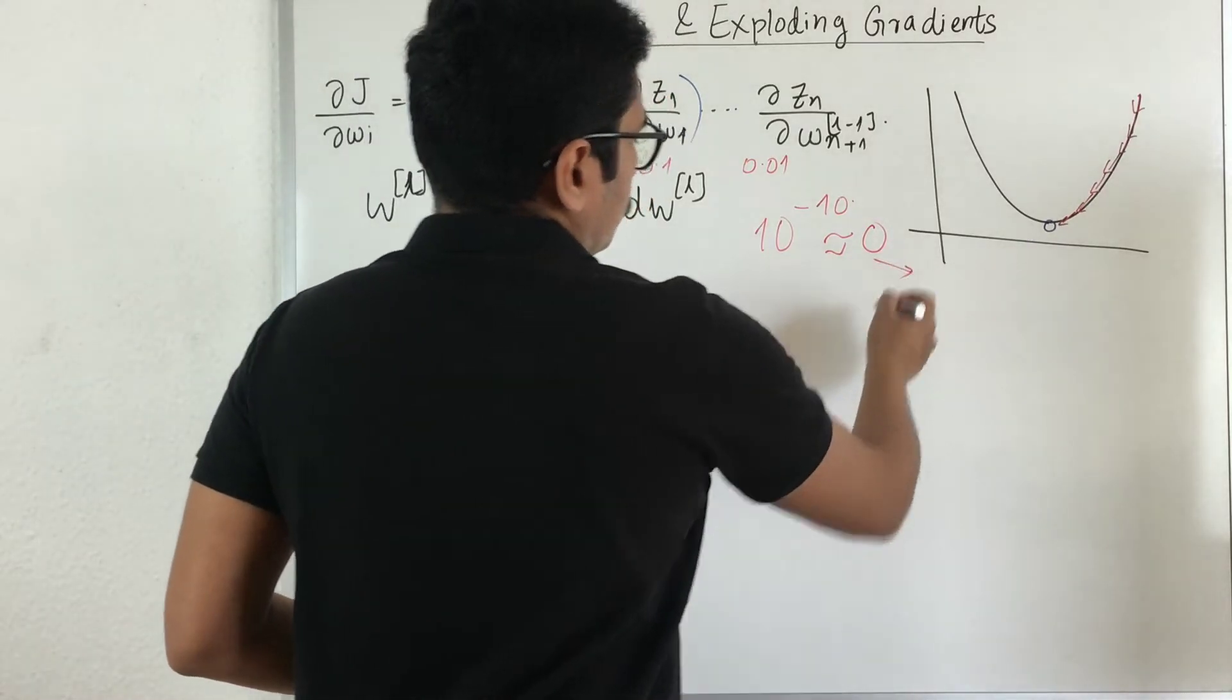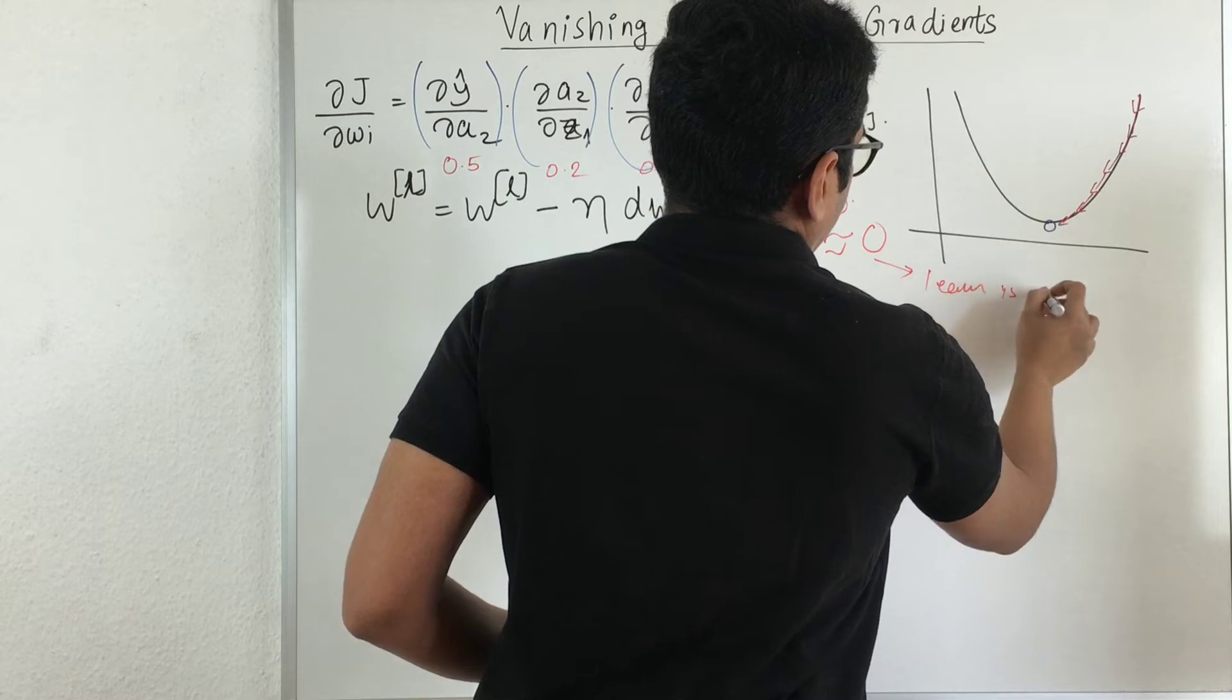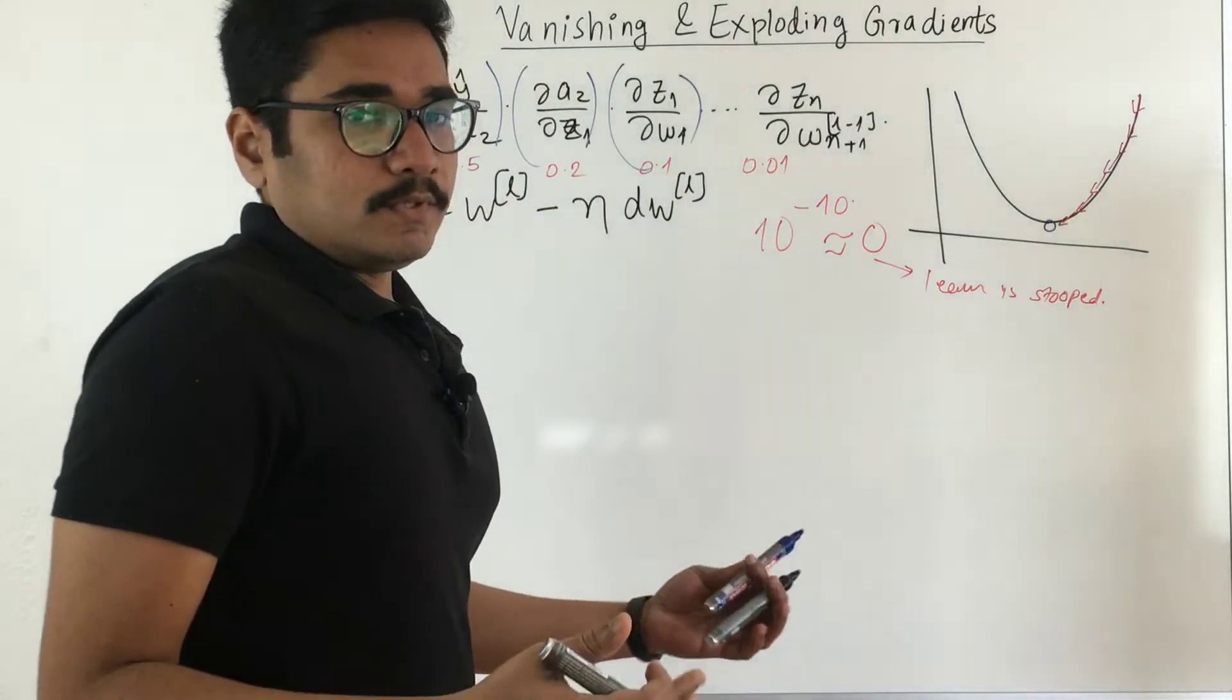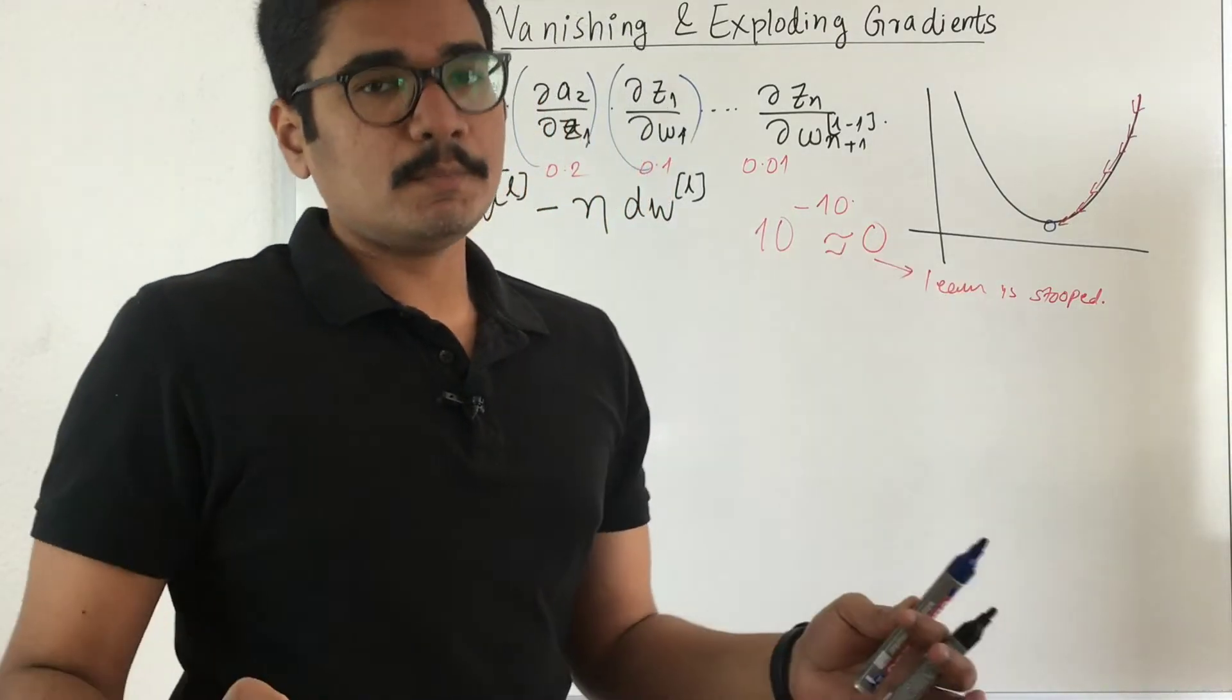So if your gradient computation is 0, that means your learning is stopped. That means the algorithm will come to know that your learning is stopped and it has reached its minimum point.